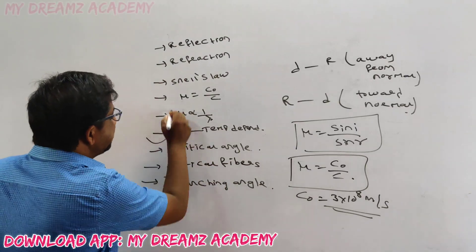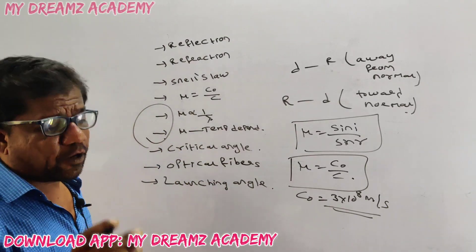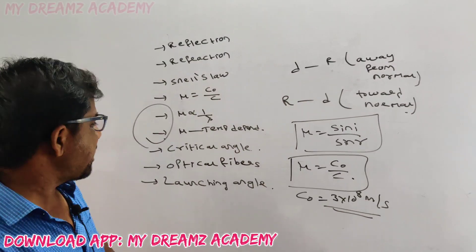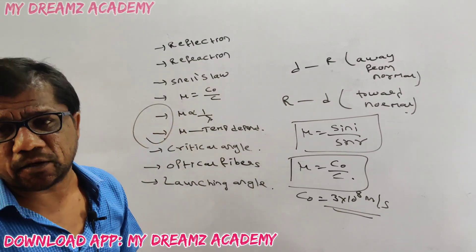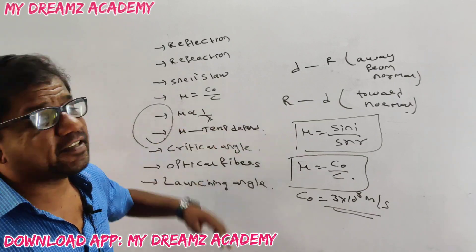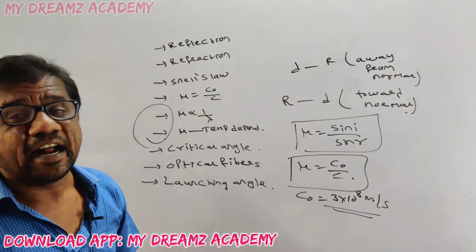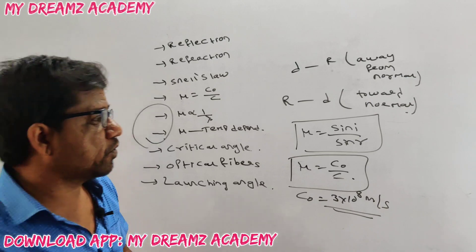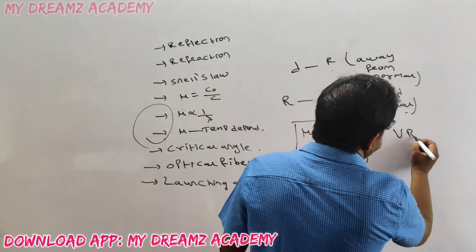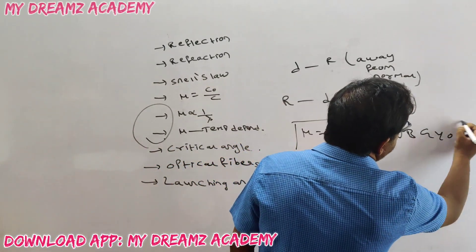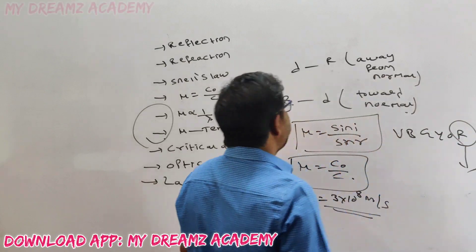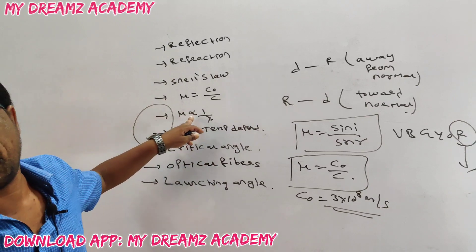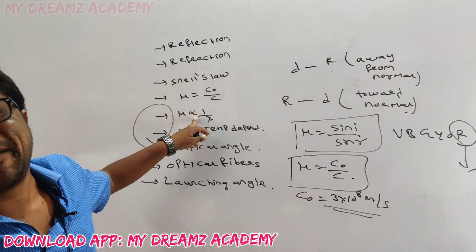I am expecting these two to be questioning areas. Refractive index is inversely proportional to wavelength. If the wavelength is lower, the refractive index will be higher. Violet light has a shorter wavelength than red light, therefore violet has a higher refractive index than red.